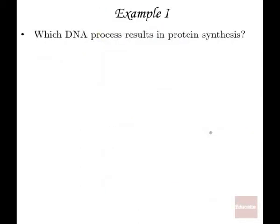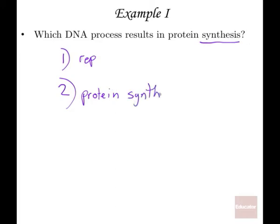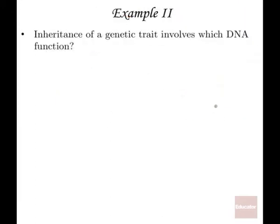Our first example: which DNA process results in protein synthesis? Going back to the two major functions of DNA — replication and protein synthesis — protein synthesis originates from DNA transcription and translation, so the answer is transcription and translation. The second example has to do with inheritance. Since inheritance requires an exact replication, the answer is, of course, replication.